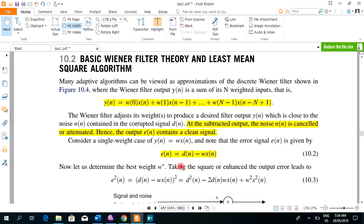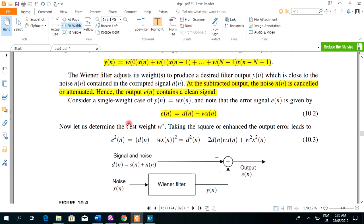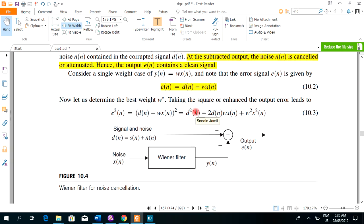Wiener filter output is just the weighted sum of the inputs. Wiener filter adjusts its weight to produce a desired filter output which is close to the noise contained in the corrupted signal. At the subtracted output, the noise is cancelled out. Hence, error-free signal is obtained. Consider a single weight case Y of N is W of N X of N and error is calculated by D of N minus W of N. You can say Y of N and substituting Y of N as W of N and X of N.